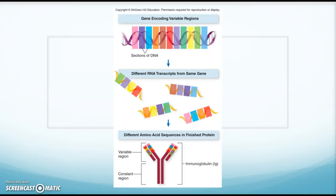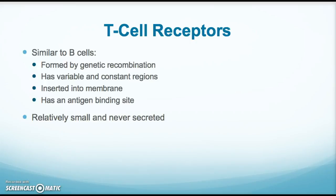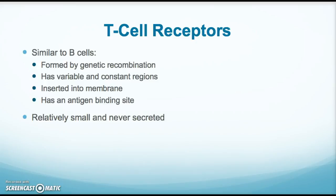With T cells, something similar occurs. T cell receptors are also formed by genetic recombination so that the variable region allows the population of T cells to have unique receptors for any given antigen. They are inserted into the membrane with the antigen binding site sticking out, they are small, and in contrast to B cells, these receptors are never secreted — they are always kept on the T cells and are not released like antibodies.